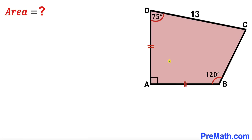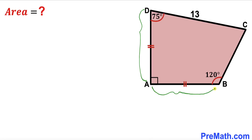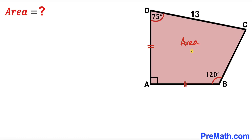Welcome to pre-math. In this video we have got this pink quadrilateral ABCD such that this angle is 120 degrees, this angle is 75 degrees, whereas this angle is 90 degrees. Moreover, this side length AD is equal to this side length AB, and furthermore this side CD is 13 units. Our task is to calculate the area of this quadrilateral ABCD.